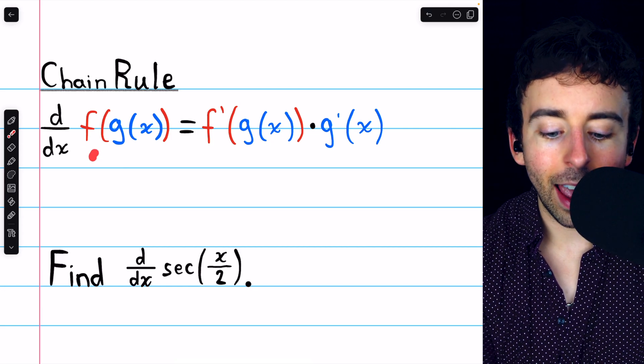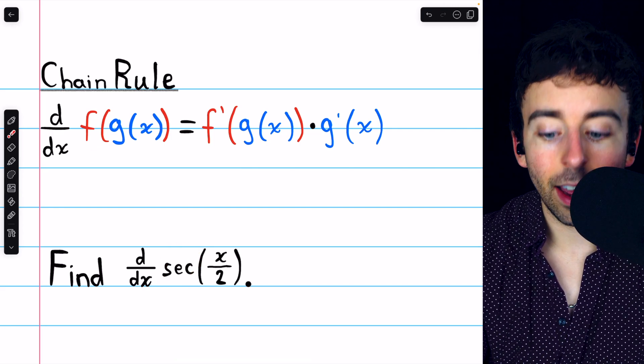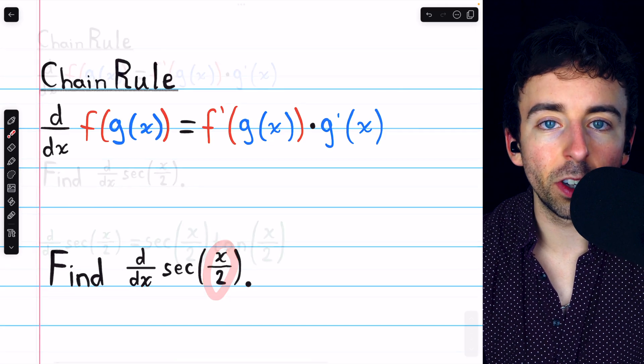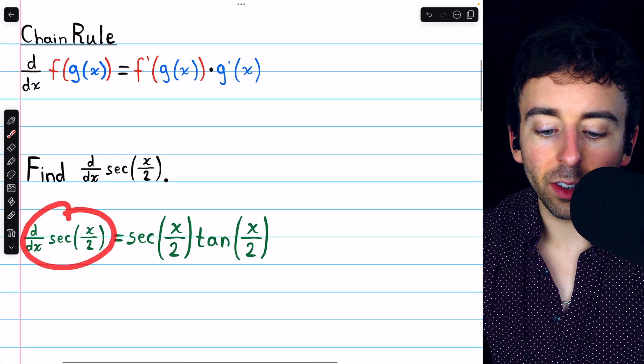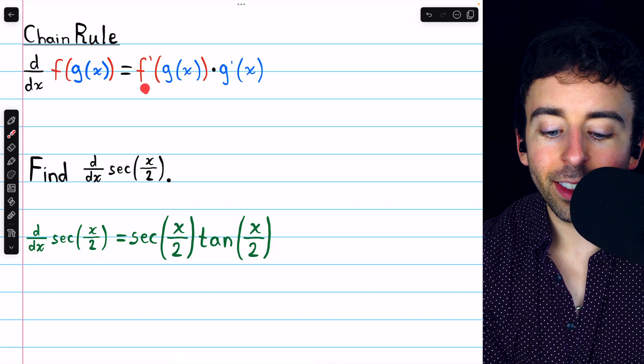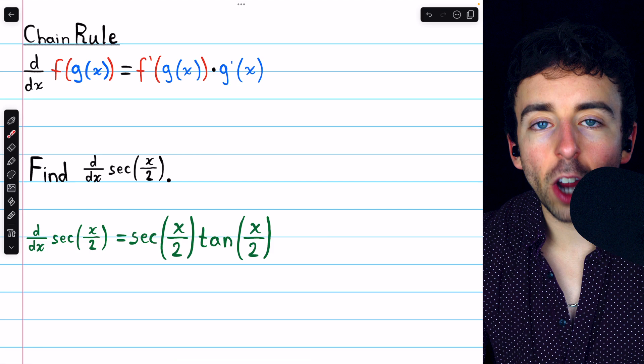In this case f, the outside function, is secant, and g, the inside function, is x over 2. So applying the chain rule to take the derivative of secant of x over 2, we first take the derivative of the outside function, leaving the inside unchanged.